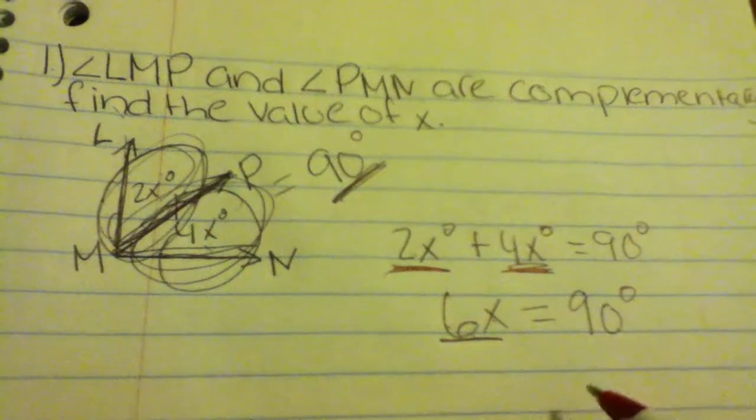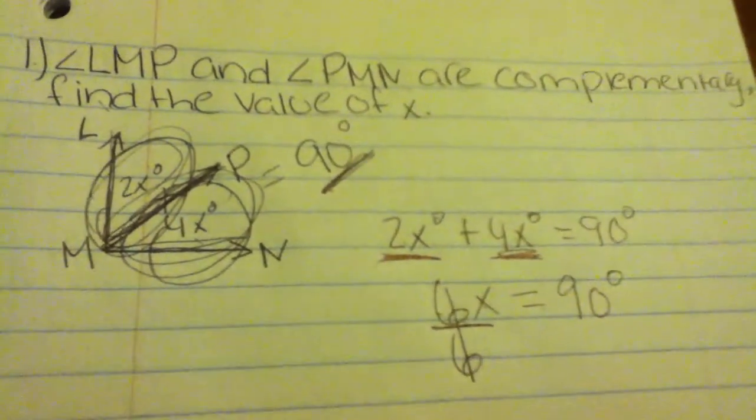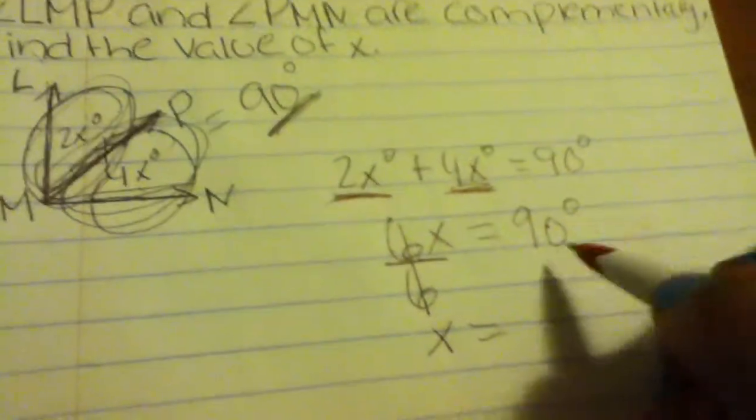You want to get x by itself and this is multiplying so you do the opposite and divide by 6. That cancels out the 6 and you bring down your x. What you do to one side you must do to the other side.